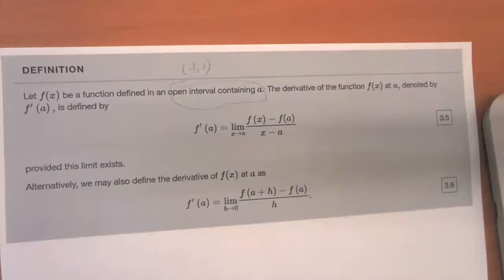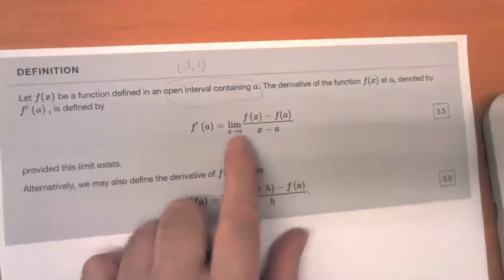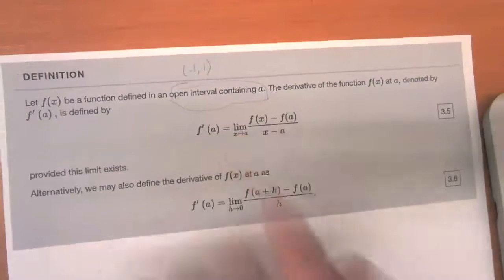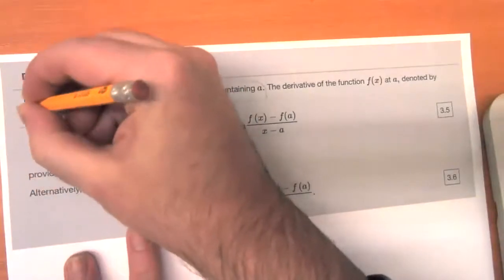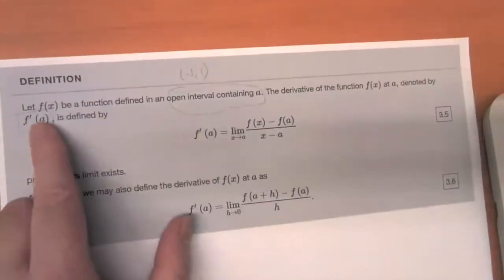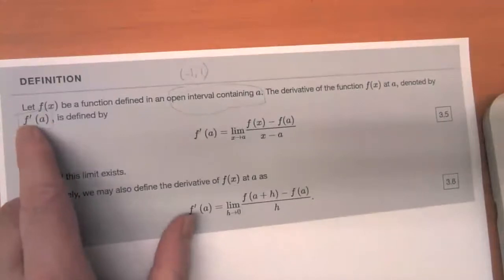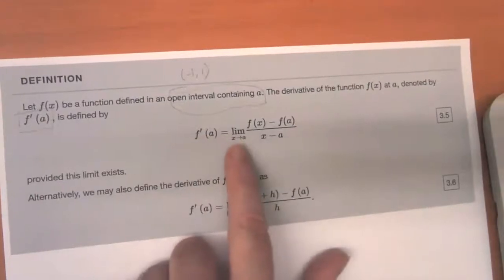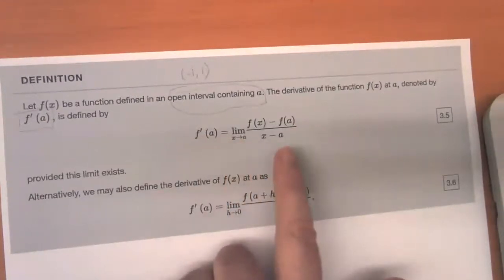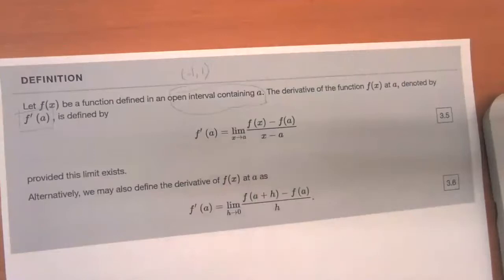So given that that definition allows us to make sense of what limit means, the derivative of the function F of X at A, which is denoted, you'll see us using this notation a lot. We're just going to toss a prime at the end of the letter that we're using for the function to talk about the derivative of the function at A is defined by. So F prime of A is equal to the limit as X approaches A of F of X minus F of A divided by X minus A.